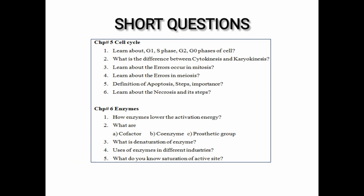Question number three: Learn about the errors that occur in mitosis. Students, for this question you don't have to explain too much, you should just explain the answer in four to five lines. Question number four, similarly, you have to explain the errors that occur in meiosis.